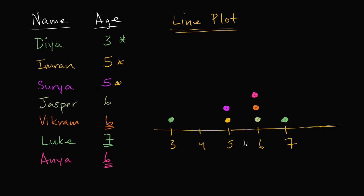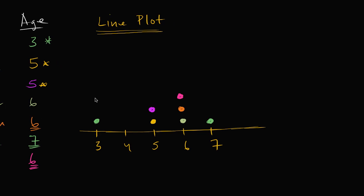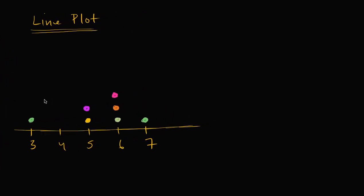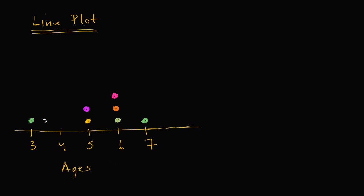If we asked ourselves a question — and let's even take the table away — if we didn't have the table and just had the line plot, and these are ages in years old and each dot represents a student at the party: based on this line plot, how many people are more than five years old? Well, you could look at this and say, okay, more than five years old — that would be six years old or seven years old.